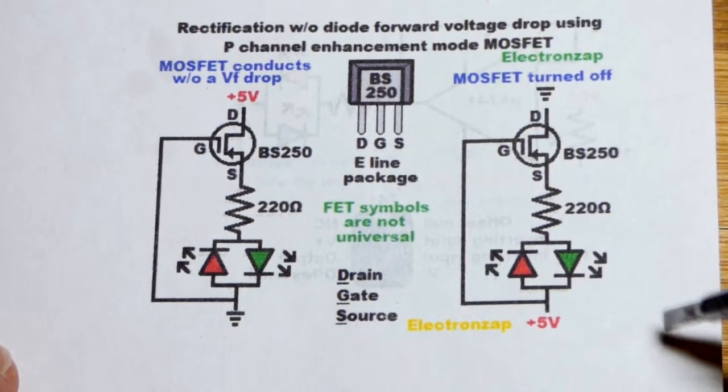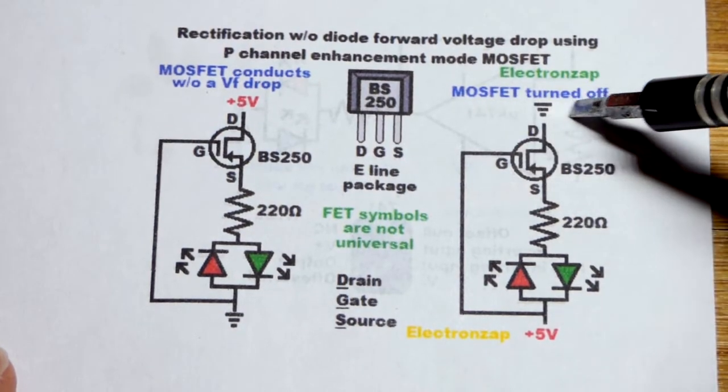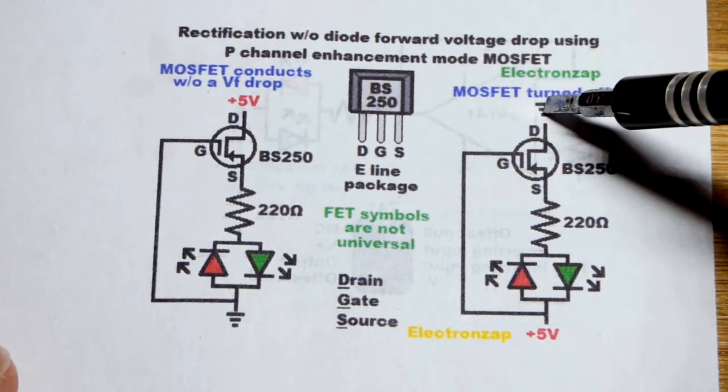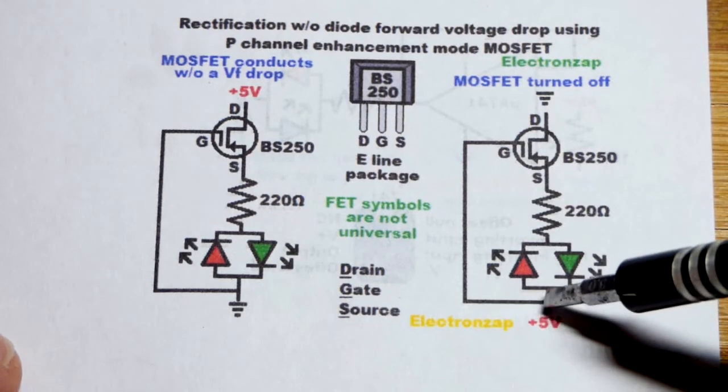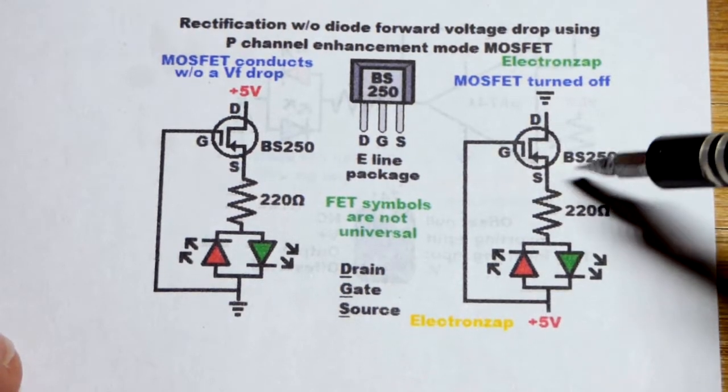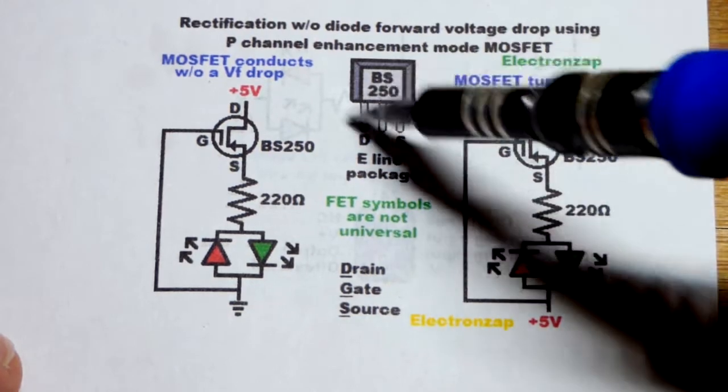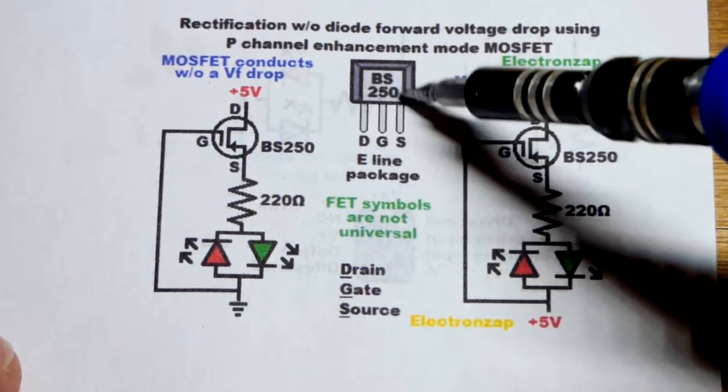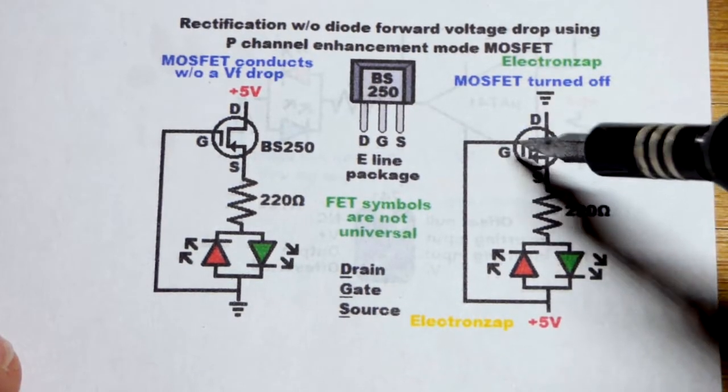Now we come to the diagram. Here is the one where the MOSFET is off. This is basically a normally off MOSFET. Usually the drain is more negative and the source more positive, and when the gate is positive, the P-channel enhancement mode MOSFET such as the BS250 is off. We're using the one in the E-line package. There's the pin layout: drain, gate, source.